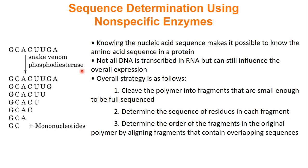Overall, the strategy for sequencing is as follows: one, you cleave your nucleotide into small enough polymers that you can sequence; two, you determine the sequence of the residues in each fragment; and three, you determine the order of the fragments by aligning them. Originally, the first sequence ever done was tRNA — 76 residues — made by randomly cutting the sequence using snake venom and piecing together the puzzle. This was extremely tedious, took roughly seven years, and so since then we have much better tools to sequence DNA.